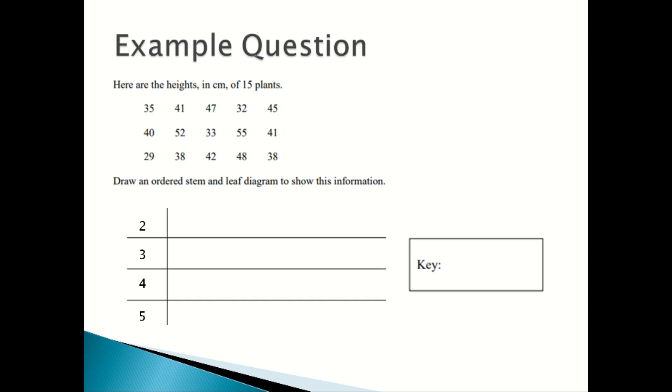So the 2 is for 20, and then on the right hand side you put all the numbers for numbers between 20 and 29, and then next you have numbers between 30 and 39, 40 and 49, and 50 and 59.